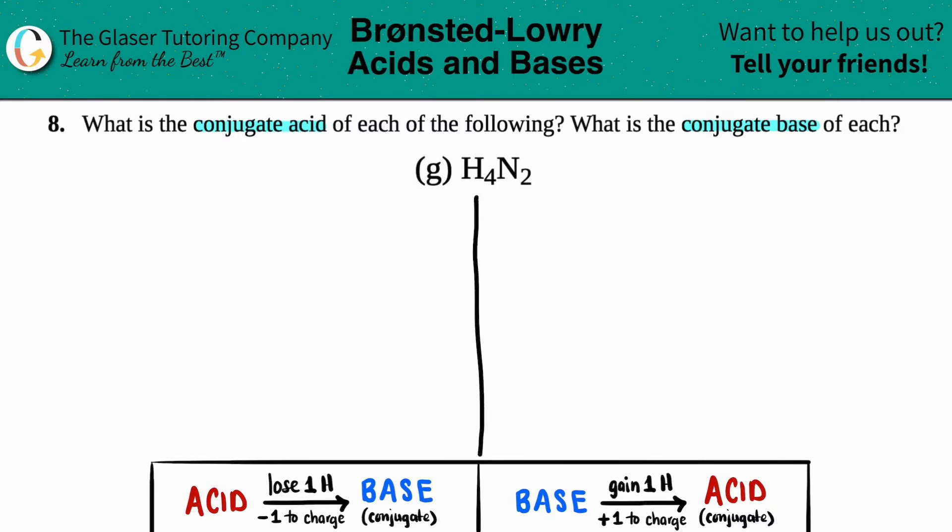So what I'm going to do is I'm just going to put a line here and we're going to work side by side. So first let's just pretend that H4N2 was acting as an acid in a certain solution. What's going to happen? We got to find the conjugate base.